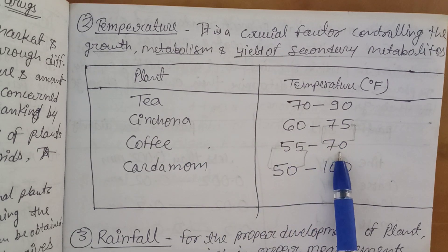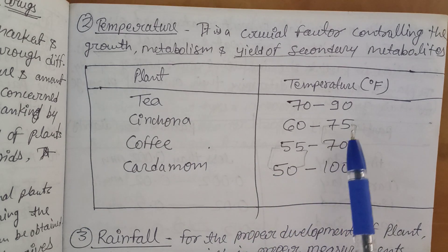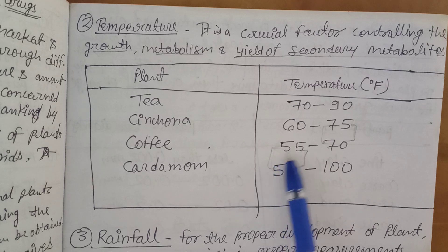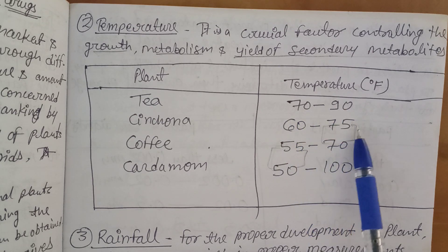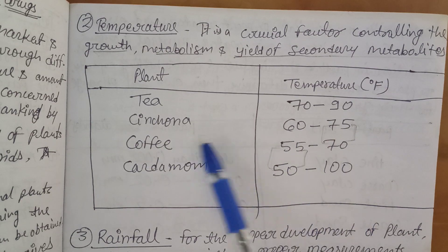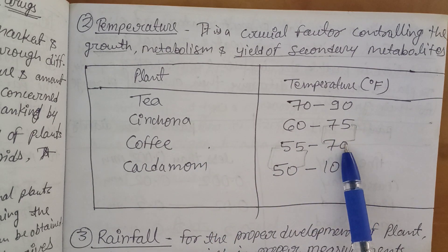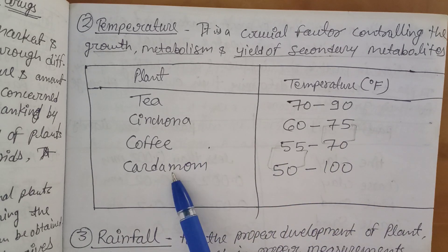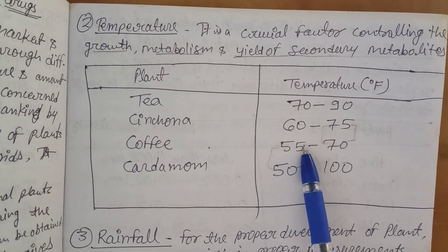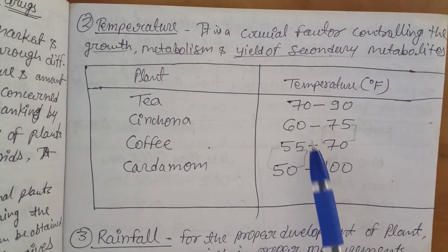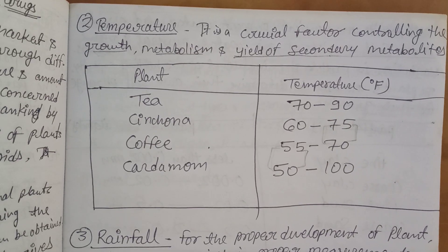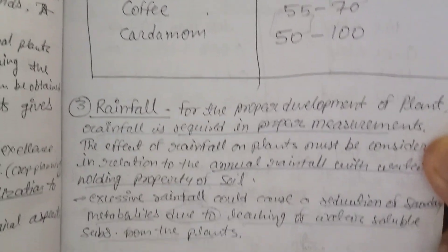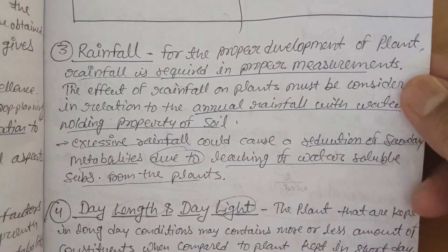Temperature values are in Fahrenheit — don't forget to write Fahrenheit. Tea: 70 to 90°F; cinchona: 60 to 75°F; coffee: 55 to 70°F; cardamom: 50 to 100°F. A memory trick: for cinchona and coffee, the maximum temperatures end in 7 — 75 and 70. For coffee and cardamom, the minimum digits both end in 5 — 55 and 50. These similarities help you remember the temperature ranges of different medicinal plants.